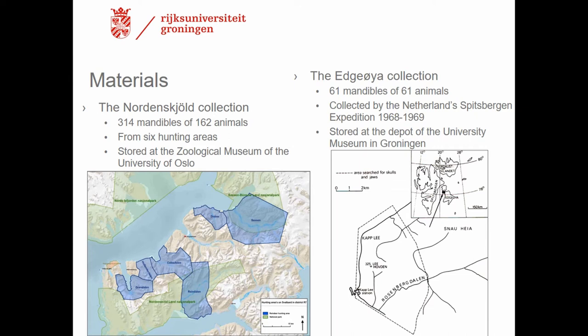The second collection is mandibles collected from the reindeer's winter range on Etzea by the Netherlands Spitsbergen expedition of 1968–1969. Here I examined 61 mandibles of known age, but during the process of casting the cemento-annuli, the first molar was destroyed. This is not a problem because I wanted to test the scheme on this collection, and in archaeological samples there will often be some teeth missing anyway, so it's actually good practice.